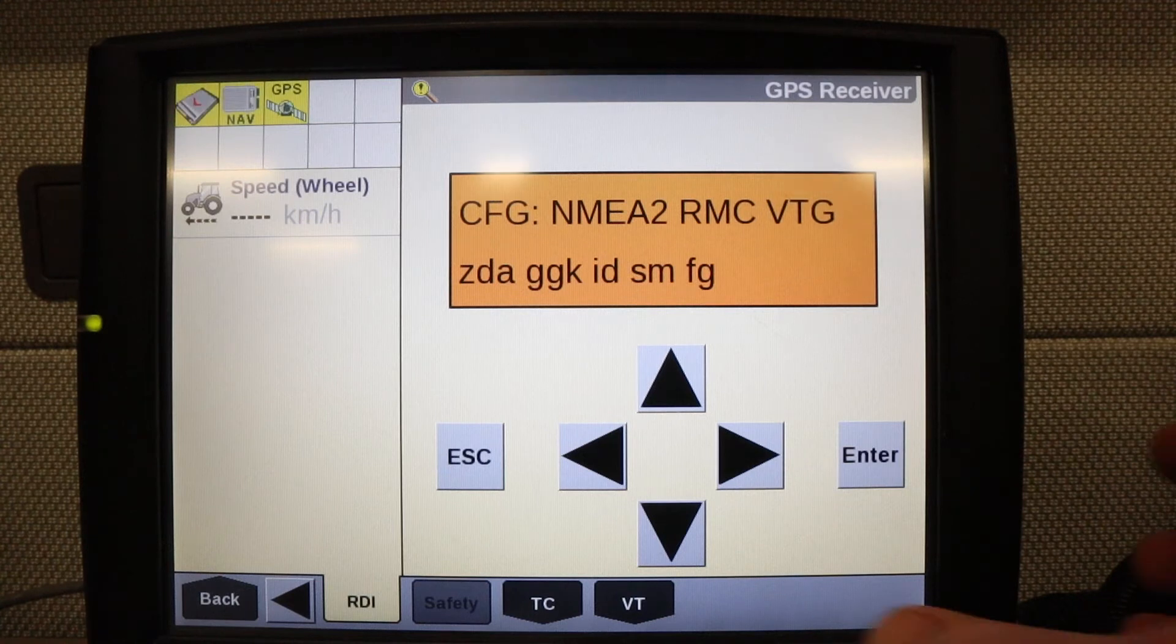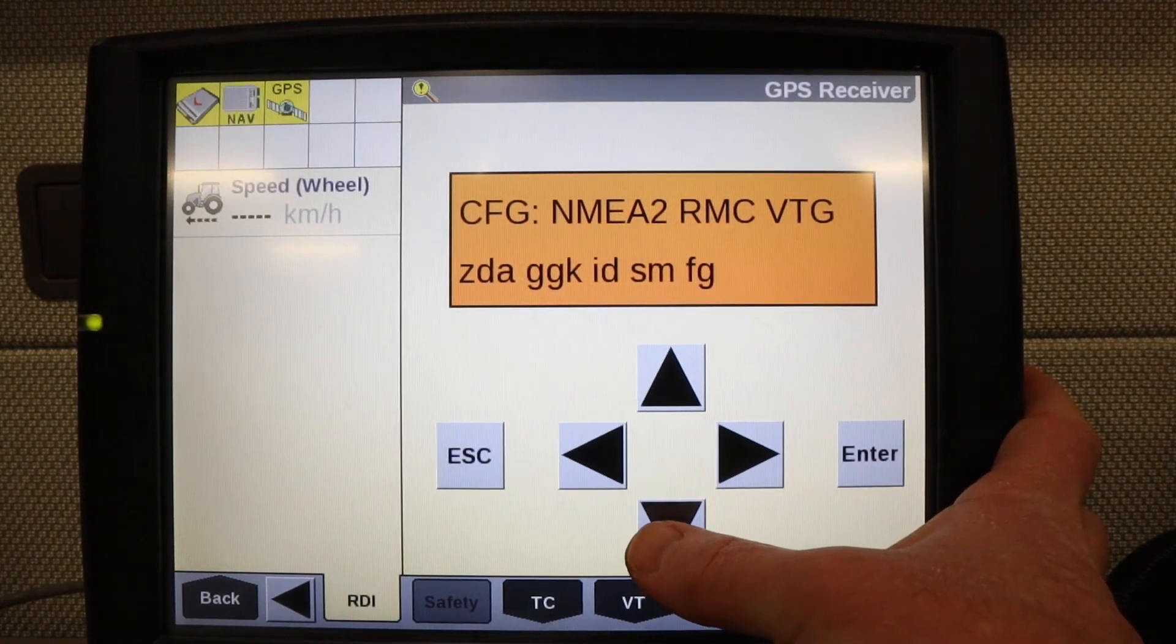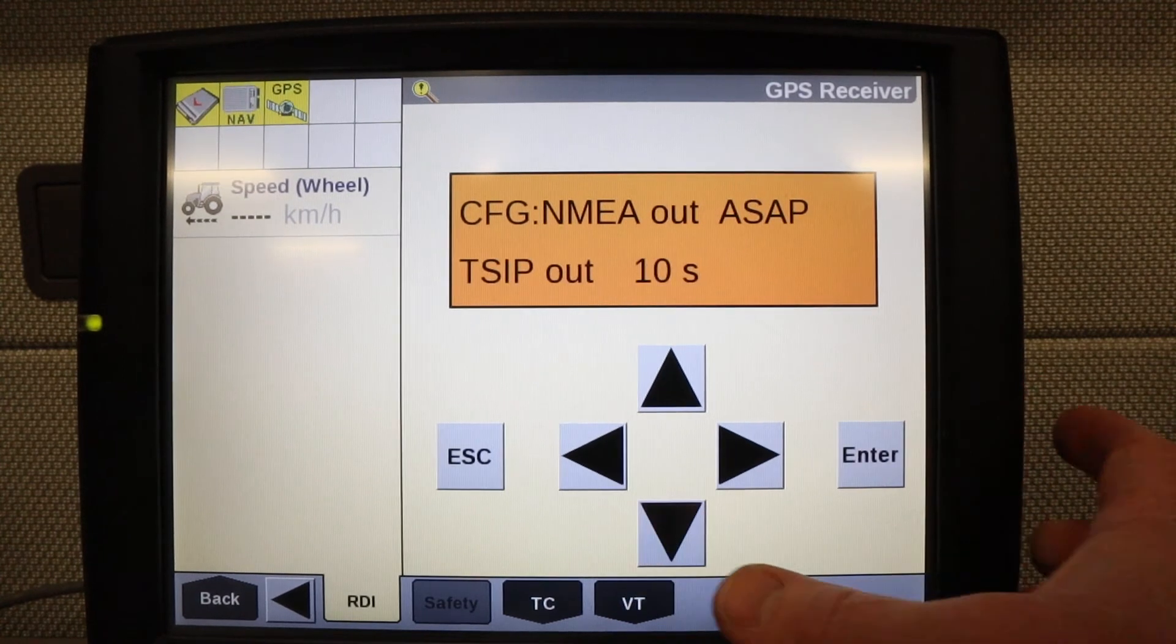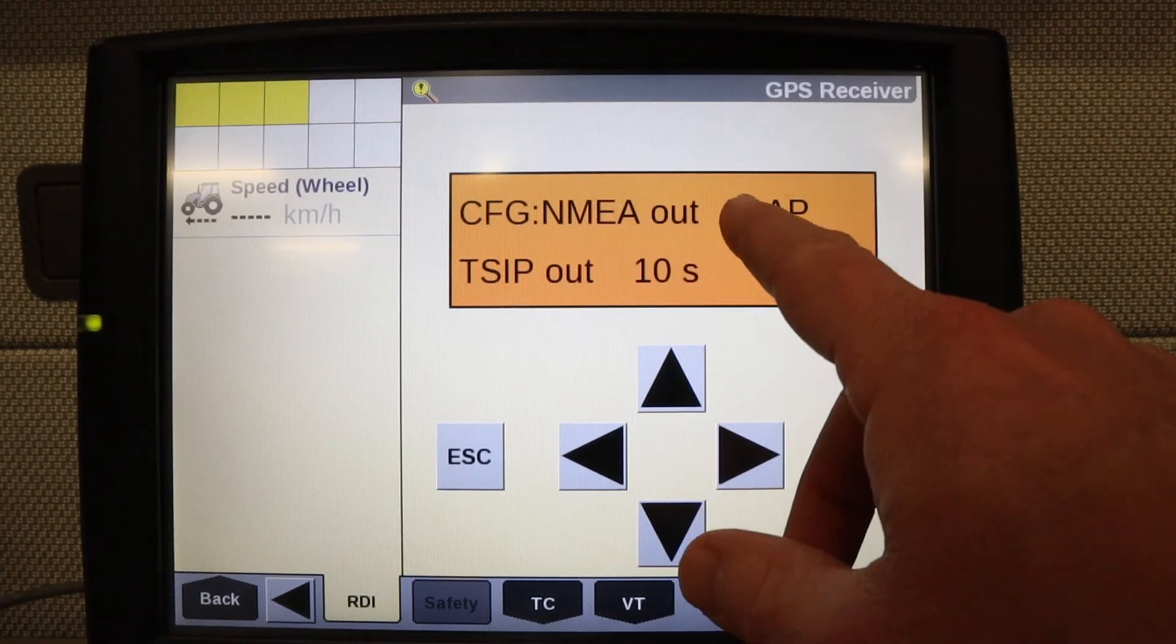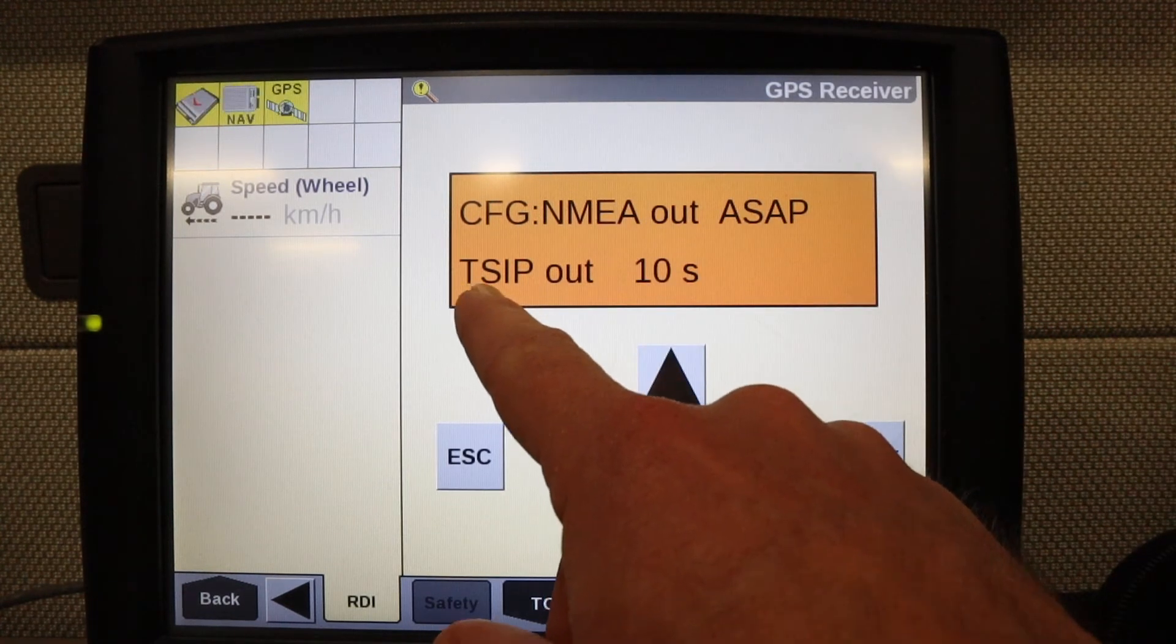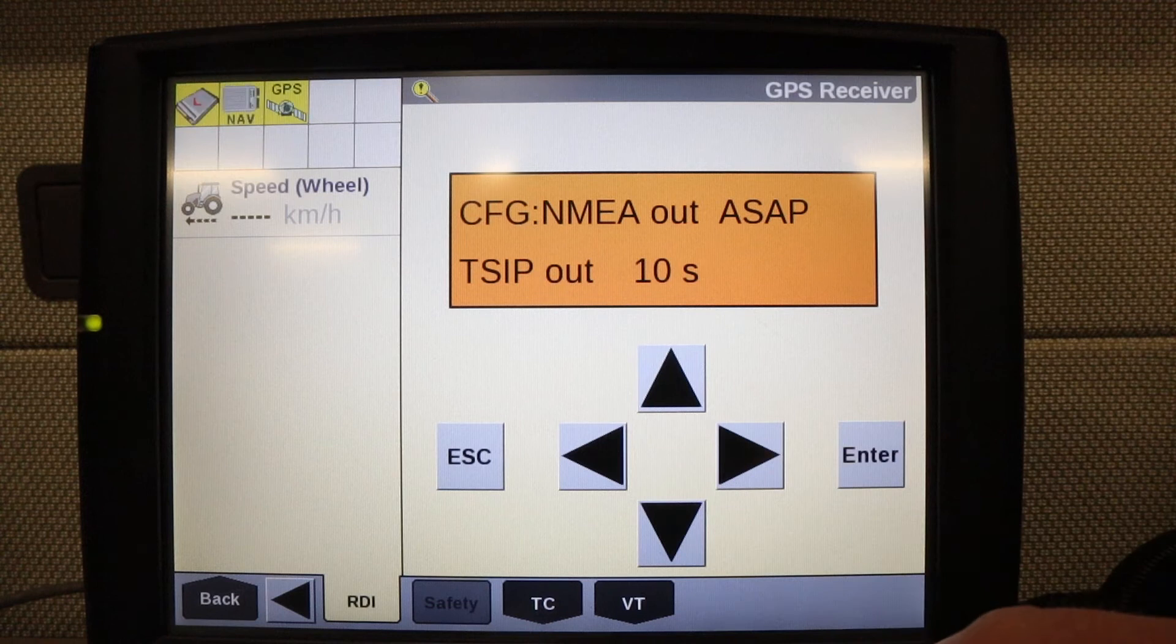Now I need to get to the NEMA out screen. I'm going to press the down arrow one, two times. Here I'm at the NEMA out screen. I need NEMA out to say ASAP and the TSIP out to also say ASAP.